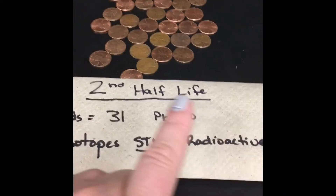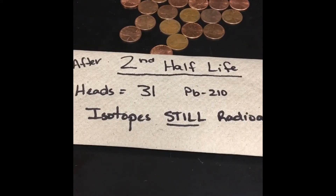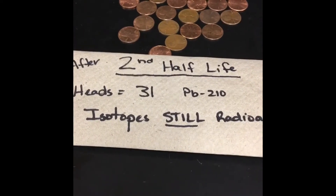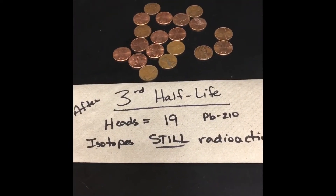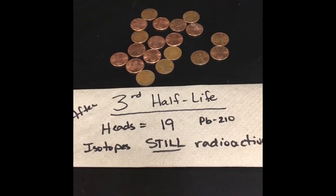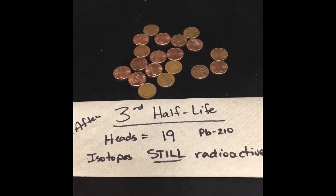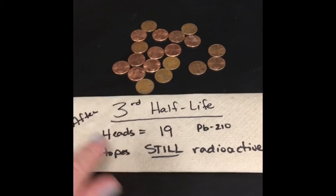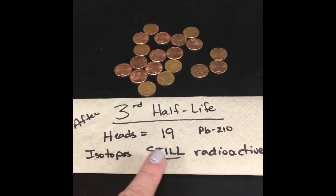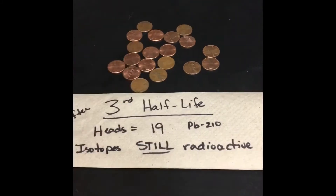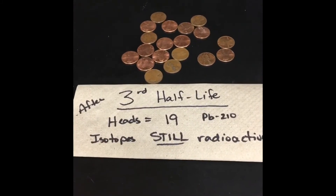So those 31 isotopes are going to go into a third half-life. I'm going to speed this one up — shake it and count it. After the 22-year time warp for the third half-life, I've counted my pennies. I've got 19 isotopes of Lead-210 that are still radioactive, and I removed the ones that became stable in those 22 years.